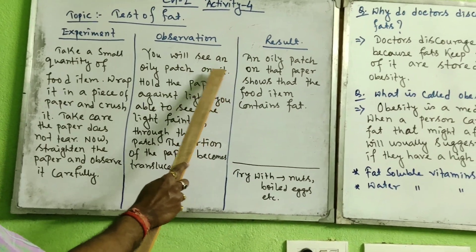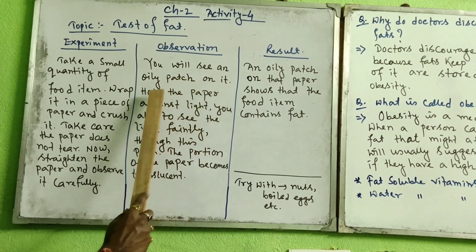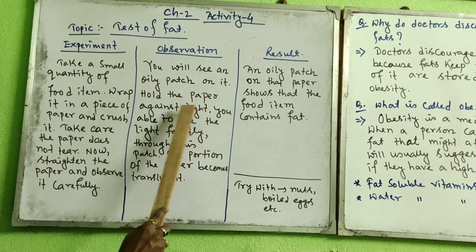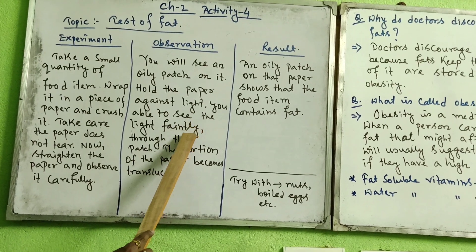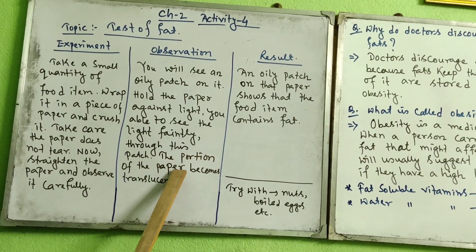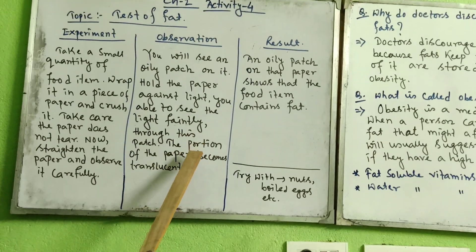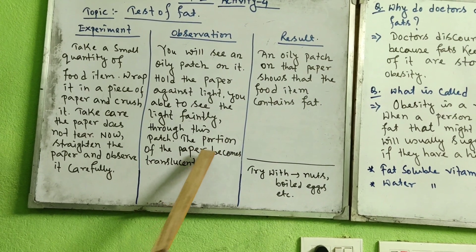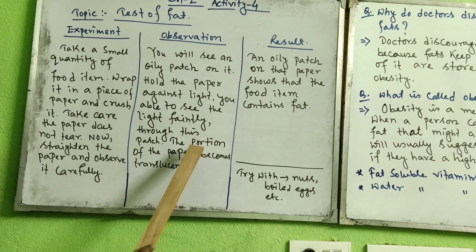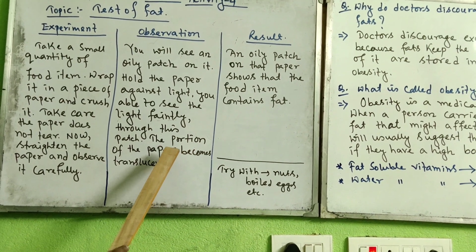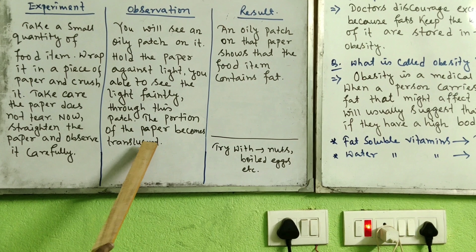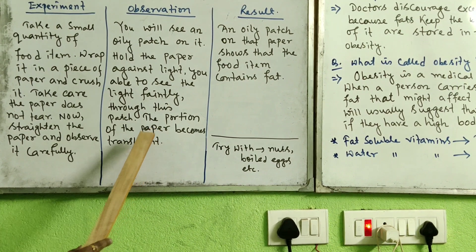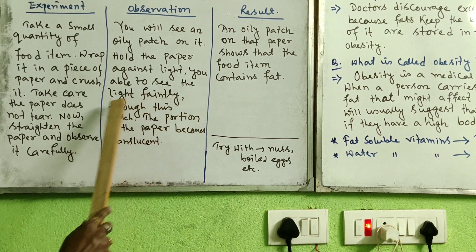Observe the paper carefully. You will see an oily patch on it. Hold the paper against the light — you will be able to see light faintly through the oily patch. That portion of the paper becomes translucent. You know there are three types of materials: transparent, translucent, and opaque. Transparent materials, like clear water or clean glass, allow light to pass easily.